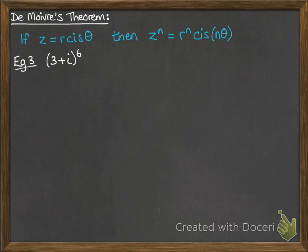So if you have 3 plus i to the 6th, for example, well first of all, the thing to note here, that is not in polar form, so we have to change it into polar form first before we can apply De Moivre's theorem.